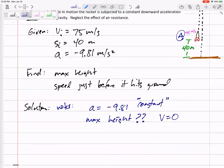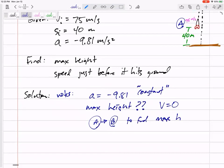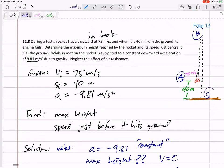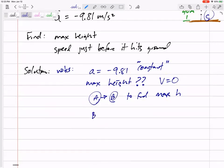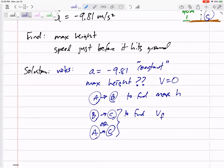And so first I would go from A to B using constant acceleration equations to find maximum height. And then I would go from B to C using constant acceleration equations to find V final. I think here you could go from B to C, or you could go from A to C to find that V final.